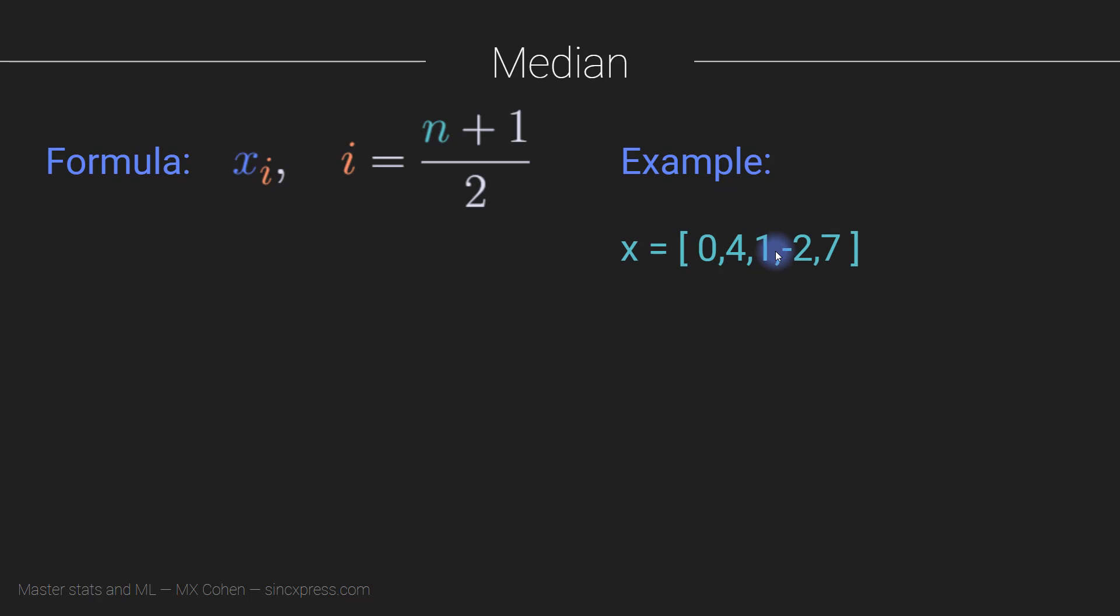Here you see an example with the same numbers. We sort the numbers from smallest to largest, and then we just take the value in the middle. This is the median. Notice that one half of the data set is smaller than the median, and one half is larger than the median.